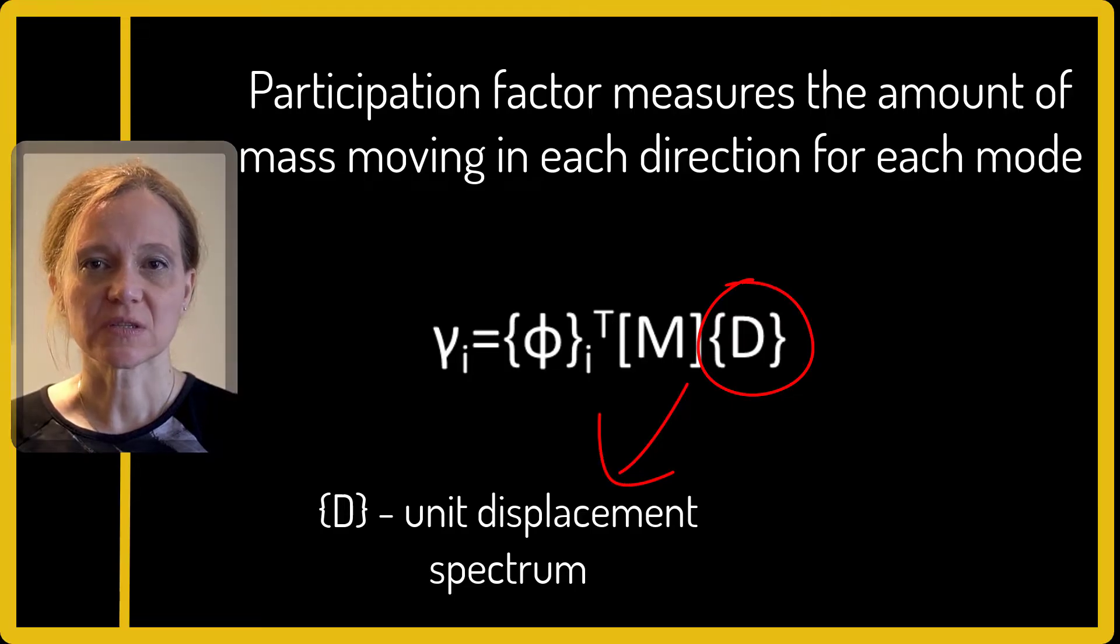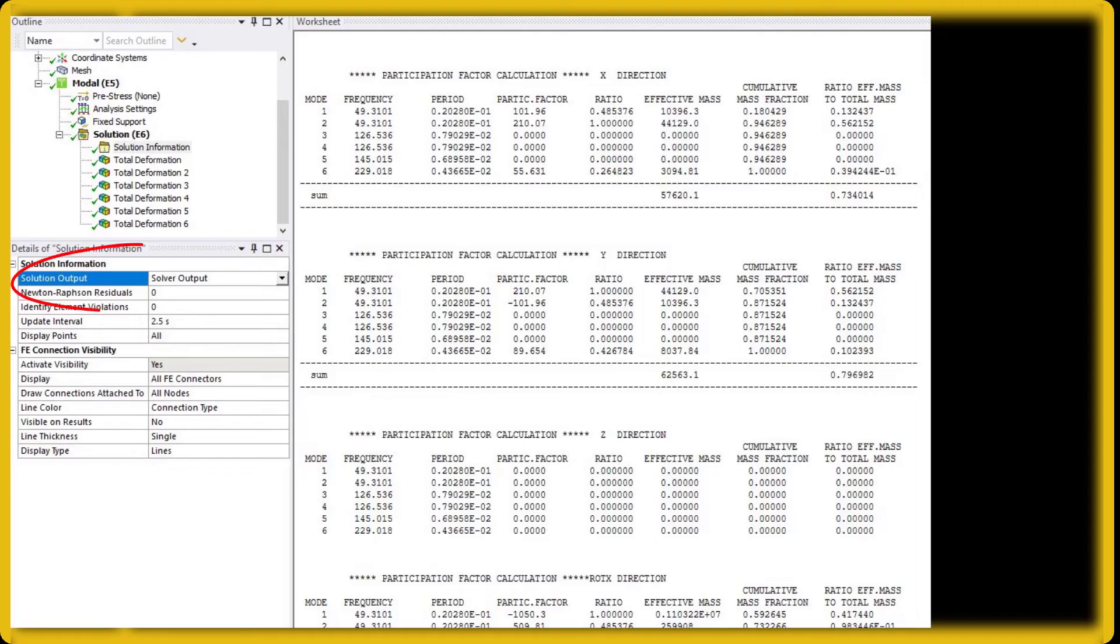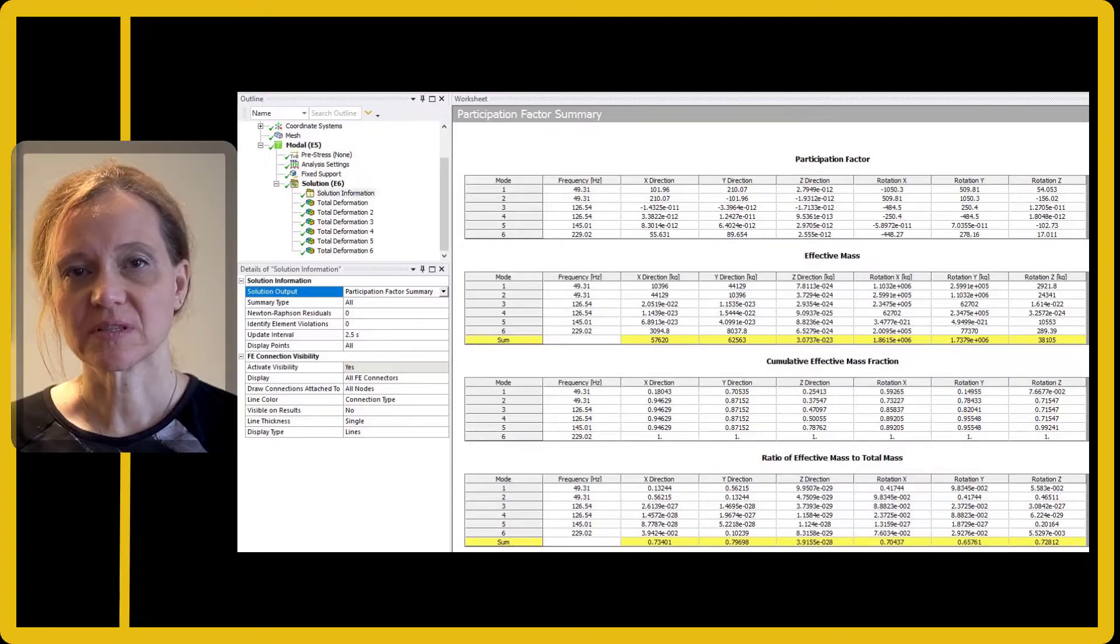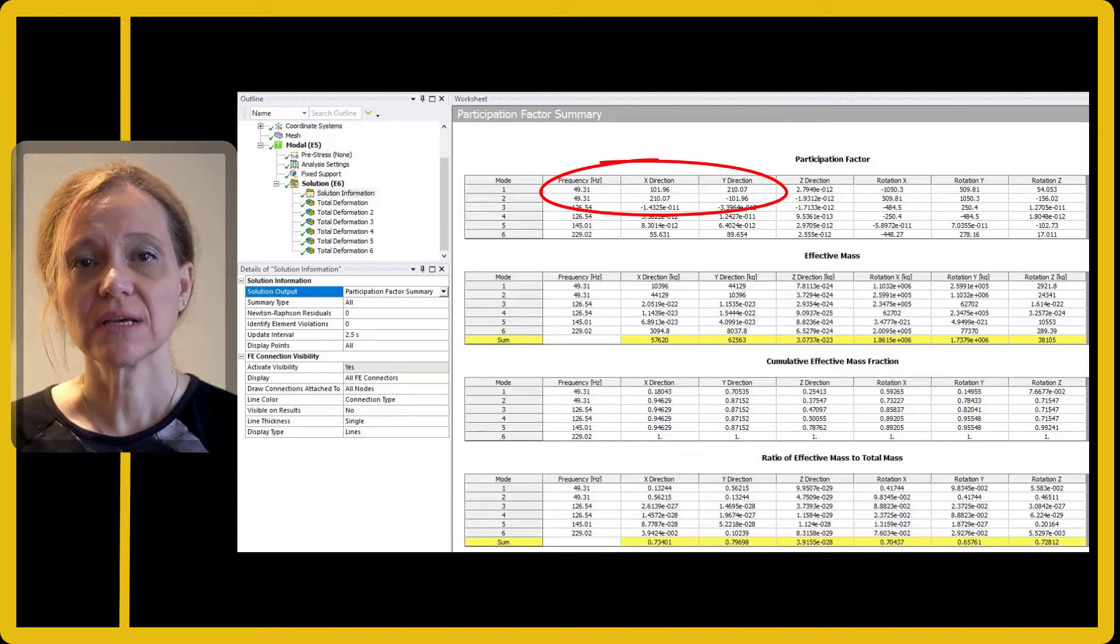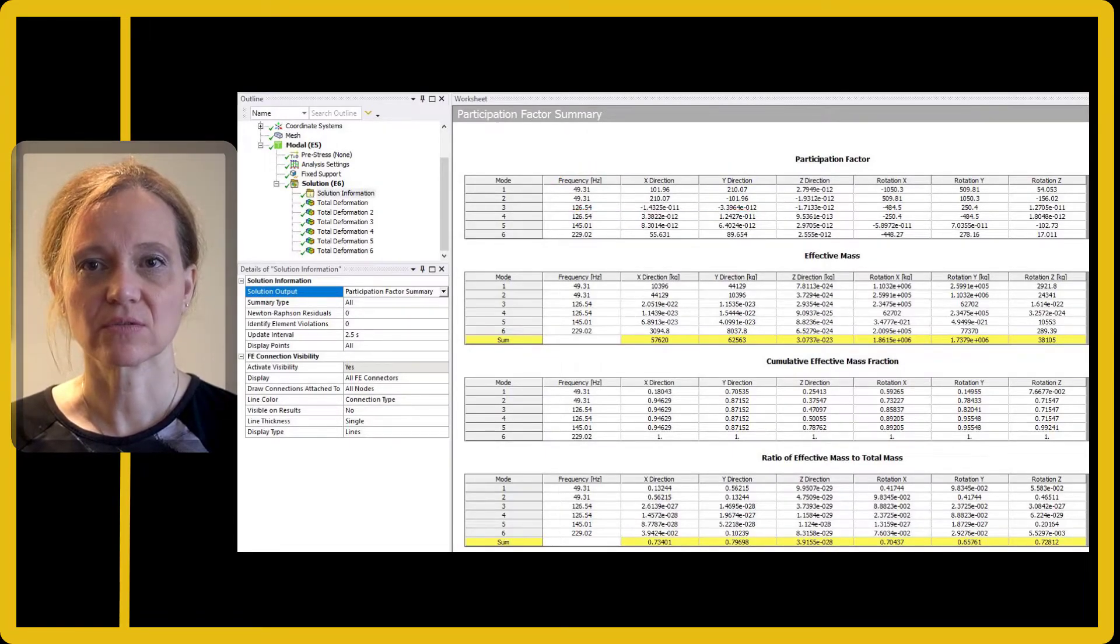Beta D is the unit displacement spectrum in each of the global cartesian directions and rotation about each of the axes. In ANSYS Mechanical, the participation factors for each direction is reported under solution information or by looking at solver output. A high value of the participation factor in a direction indicates that mode will likely be excited by forces in that direction.